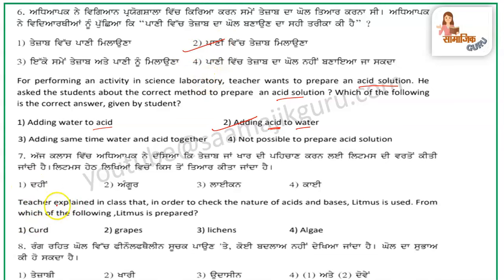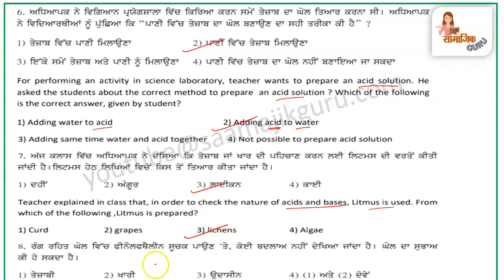The next question: the teacher explained in class that to check the nature of acids and bases, litmus is used. If we want to know the nature of an acid or base, we use litmus paper. From which of the following is litmus prepared? The answer is lichens.